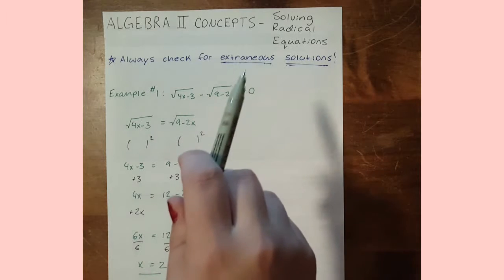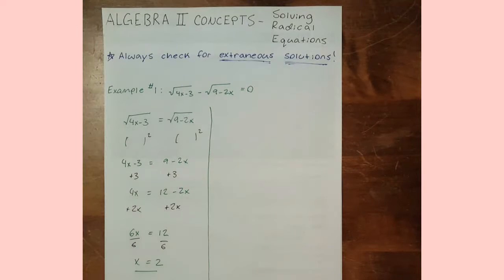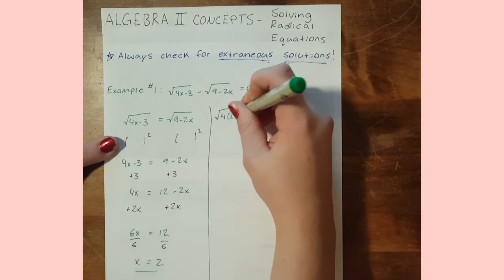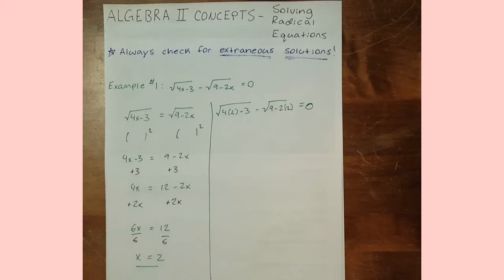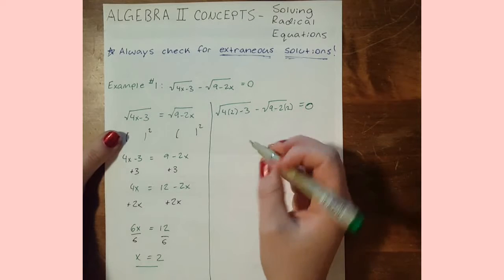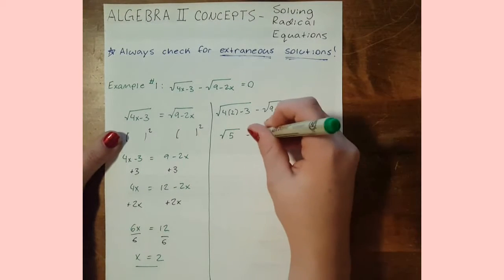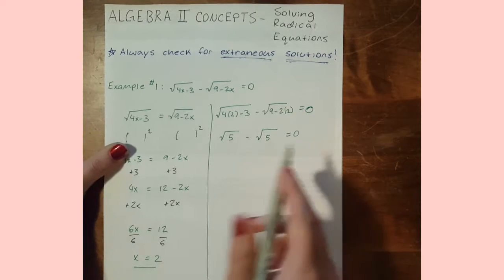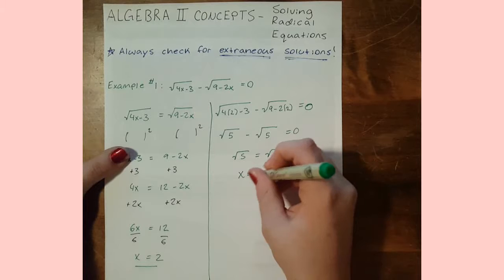But you're not done yet. As I mentioned, you need to check that the solution is not extraneous. We plug x equals 2 back into the original equation: the square root of 4 times 2 minus 3 minus the square root of 9 minus 2 times 2 equals 0. That simplifies to the square root of 5 minus the square root of 5, which does equal 0. So x equals 2 is a valid solution.